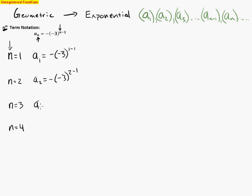Let's do it one last time. a_3 equals negative, negative 3, with 3 minus 1. And then finally, a_4 equals negative, negative 3, 4 minus 1.